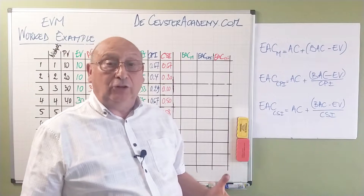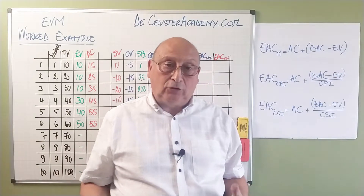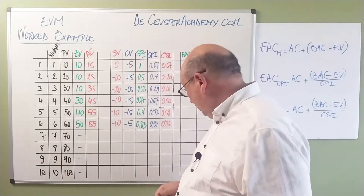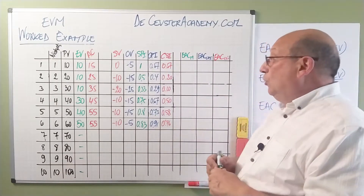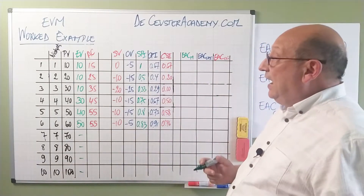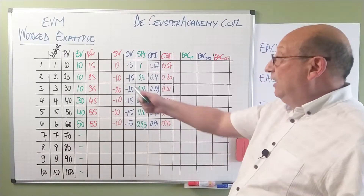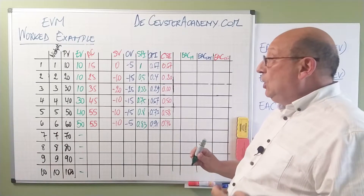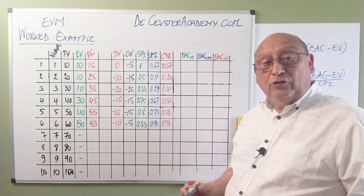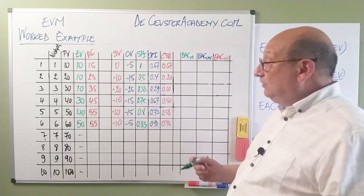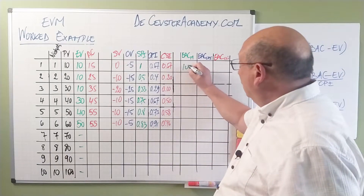We will see how those values evolve and what we can do with them over the project. Looking at the mathematical estimate: we have 10 already done, an actual cost of 15, and we already created 10 widgets — the value for one widget being 10K. So 15 plus the remaining 90 is 105.